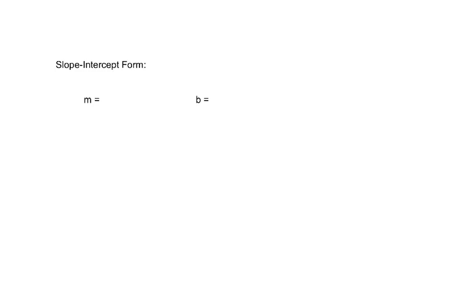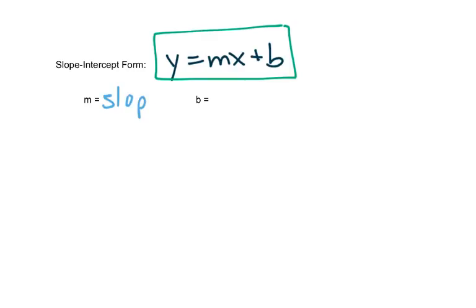The slope-intercept form is y equals mx plus b. Put a box around that, we're going to need that. Remember, m stands for our slope and b stands for our y-intercept.